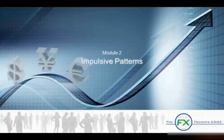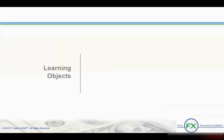Welcome to Module 2 of the Elliott Wave Vertical. This module is on impulsive patterns. By now, we have completed Module 1, Elliott Basics, and learned about the Foundation of Elliott Wave Theory, Basic Wave Patterns, Wave Characteristics, Introduction to Mathematical Applications, The Three Essential Rules, and the Labeling of Waves.